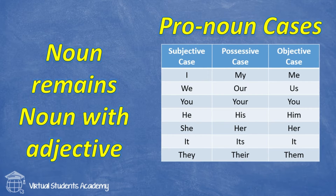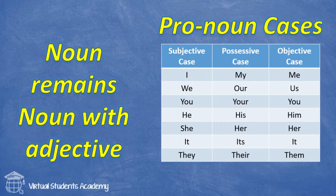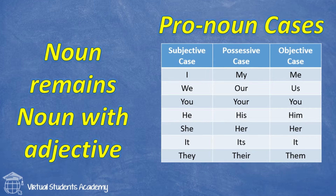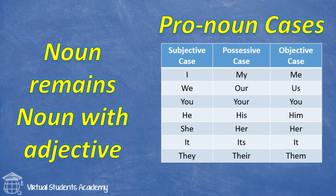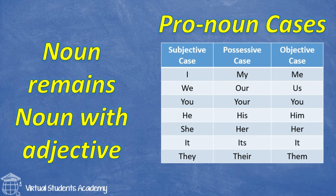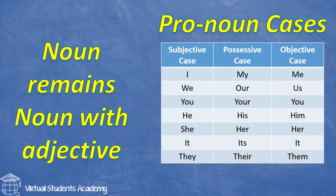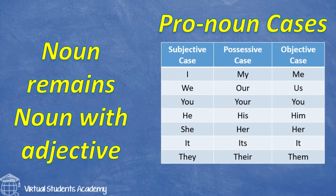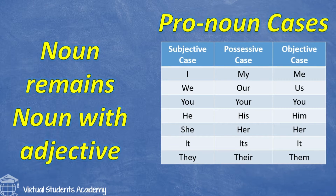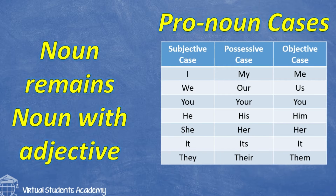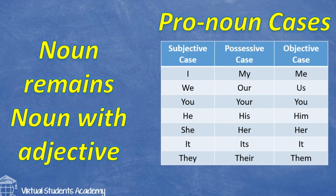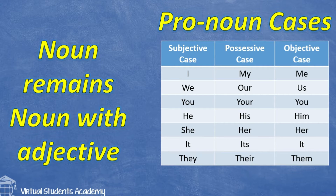Remember, when you turn a sentence from active voice to passive voice, 'now' remains 'now' with its adjective. But pronoun cases are different. If the subject is 'I,' it will change to 'me' in the objective case. Please try to learn by heart this chart. There are three cases of pronouns: subjective case, possessive case, and objective case.